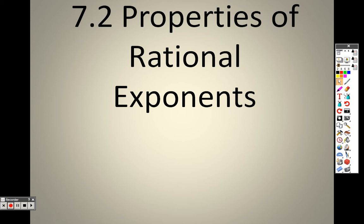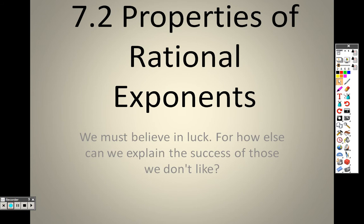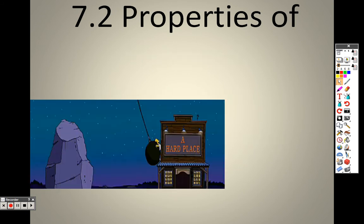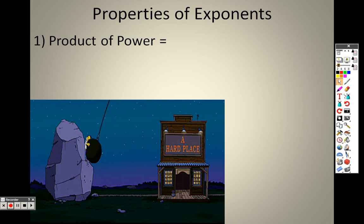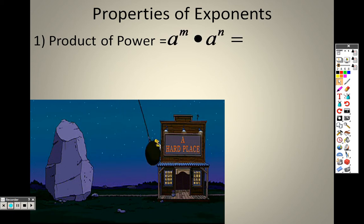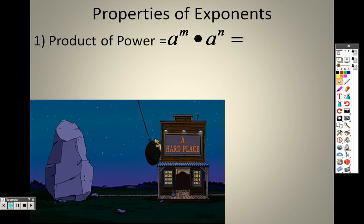7.2 Properties of Rational Exponents is what we are on right now. We have the product of power property, and we went over all these properties back in 6.1. I'm reviewing these now with rational exponents — that's basically all that's happening here.